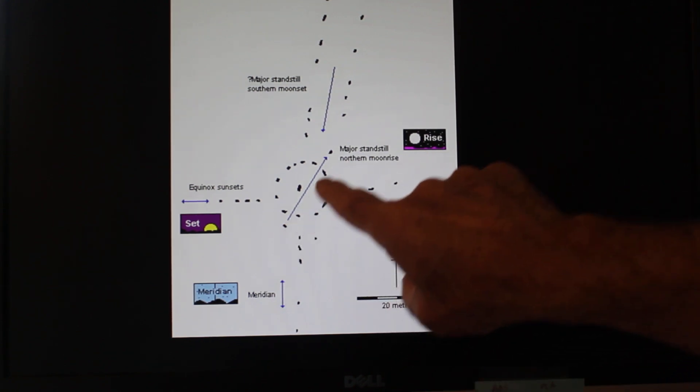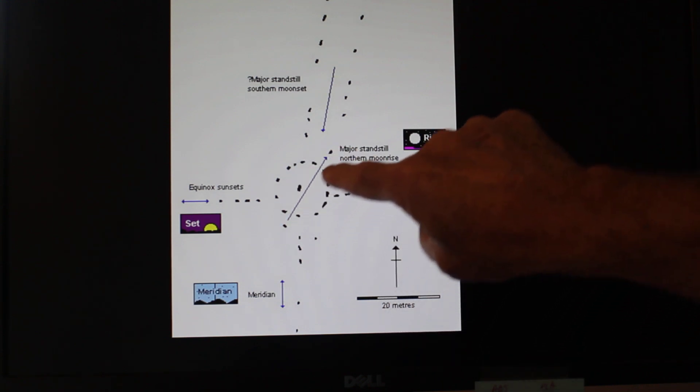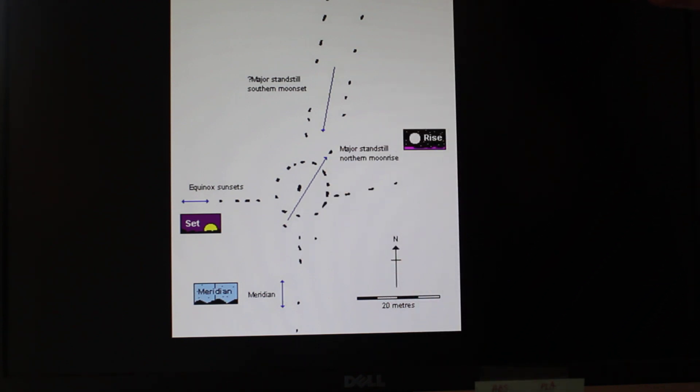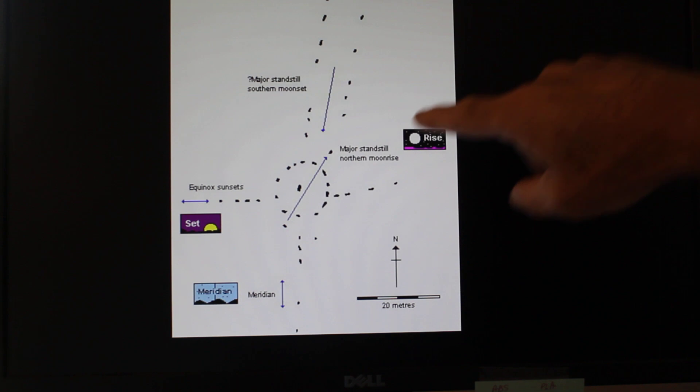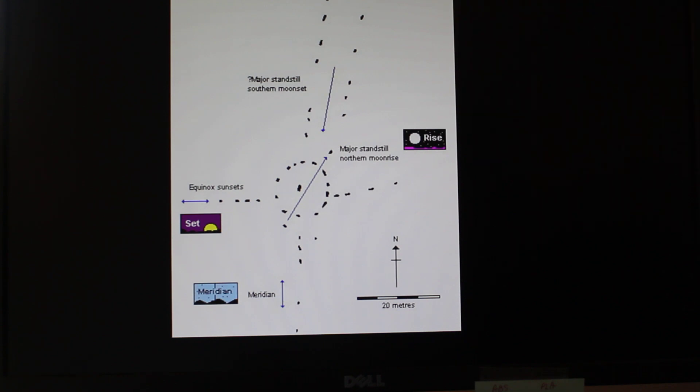And then you see there's a couple of stones that are outside the circle. And if you line up on those, those correspond going this way to the northern moon rise, the major standstill of the northern moon rise, when the moon was in the summer solstice. I mean the sun was at the summer solstice and the moon was five degrees plus that. So it would be the northern extreme of the sun on the summer solstice.